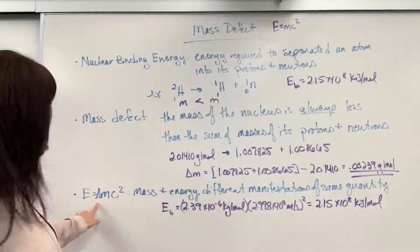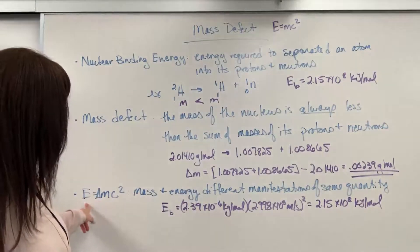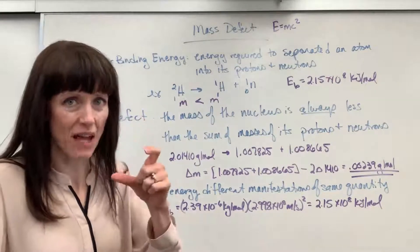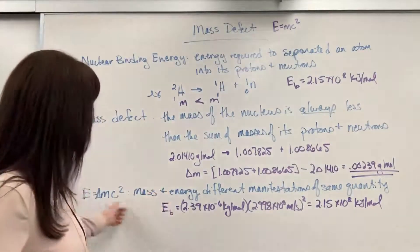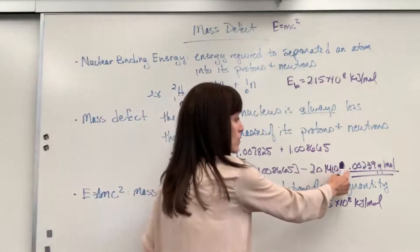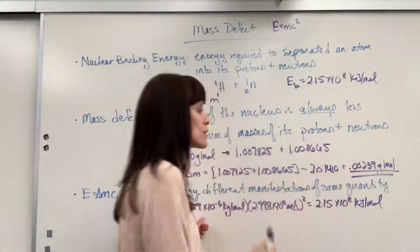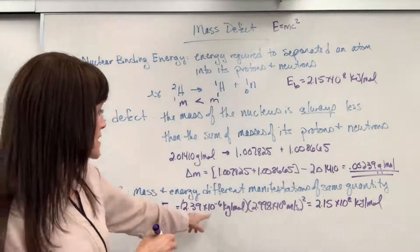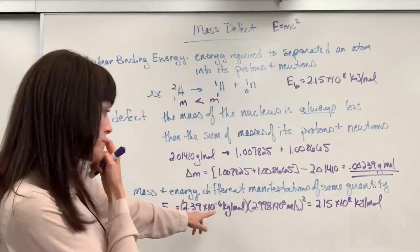Now, notice what I did here. I did a delta. When we say energy equals mass times speed of light squared, it's actually the change of mass. It's the mass defect, okay? So the change of mass. Our change of mass right here, 0.00239 grams per mole, just converted that to kilograms per mole. So it's 2.39 times 10 to the minus 6 kilograms per mole.